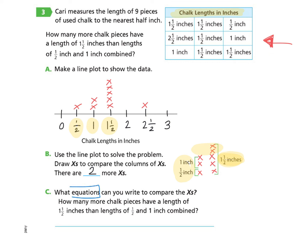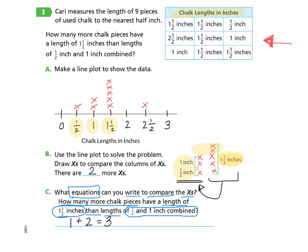Let's take a look at Part C. What equations can you write to compare the X's? How many more chalk pieces have a length of one and a half inches than the lengths of half inch and one inch combined? Half inch and one inch combined: one plus two equals three. One and a half inches has five. Five take away three equals two. The answer is two more chalk pieces. If you would like to go back and watch this video, you can do so at any time and pause along the way as needed.